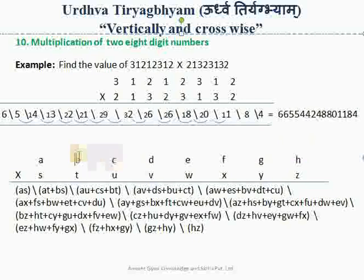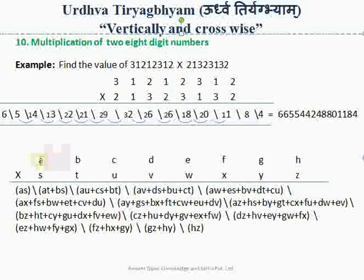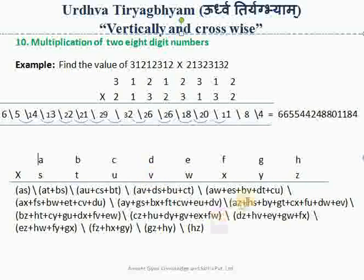Then we shall move towards the next column, taking B to H: B into Z plus H into T plus C into Y plus G into U plus D into X plus F into V plus E into W. Then we take all different columns: A into Z plus H into S plus B into Y plus G into T plus C into X plus F into U plus D into W plus E into V.